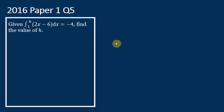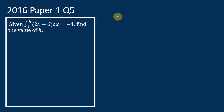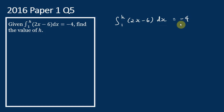Now let's look at another question. This is from the 2016 exam, Paper 1, Question 5. Given that the integration of (2x minus 6) dx from 1 to h equals negative 4, find the value of h. Let's integrate this expression first.